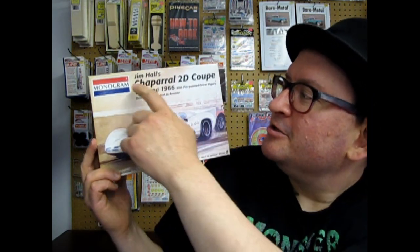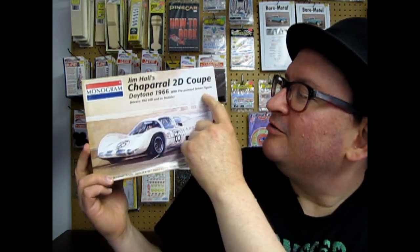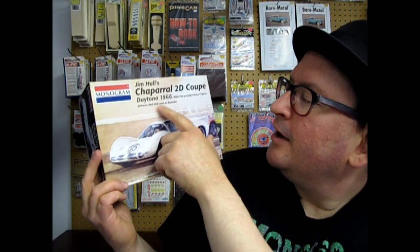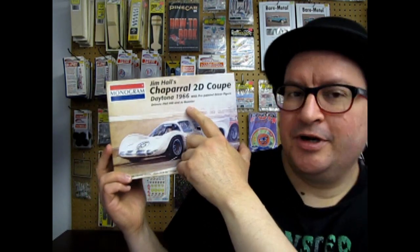Today we are looking at another one of the great race cars. I figured last week we were looking at the Alpine A210 by Union, so we might as well continue racing at the pits with our Monogram 1966 Chaparral 2D Coupe Daytona 1966 Jim Hall's with pre-painted driver figure, drivers Phil Hill and Joe Bonnier. So that was quite a big title on this box for a very cool kit.